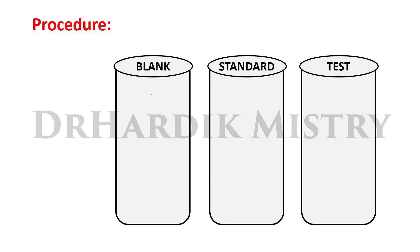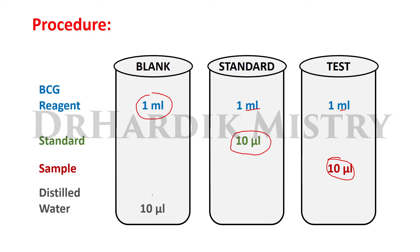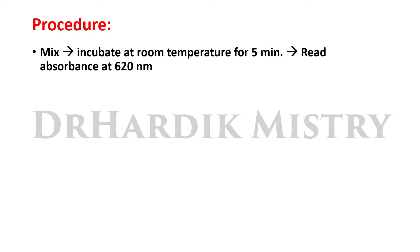Now the procedure: take three test tubes and label them as blank, standard, and test. Add 1 ml of BCG reagent in all three test tubes. Add 10 microlitres of the standard solution in the standard test tube, add 10 microlitres of the sample in the test tube, and add 10 microlitres of distilled water in the blank test tube. Mix well all three test tubes and incubate at room temperature for 5 minutes. After 5 minutes, read absorbance colorimetrically at a wavelength of 620 nanometers.